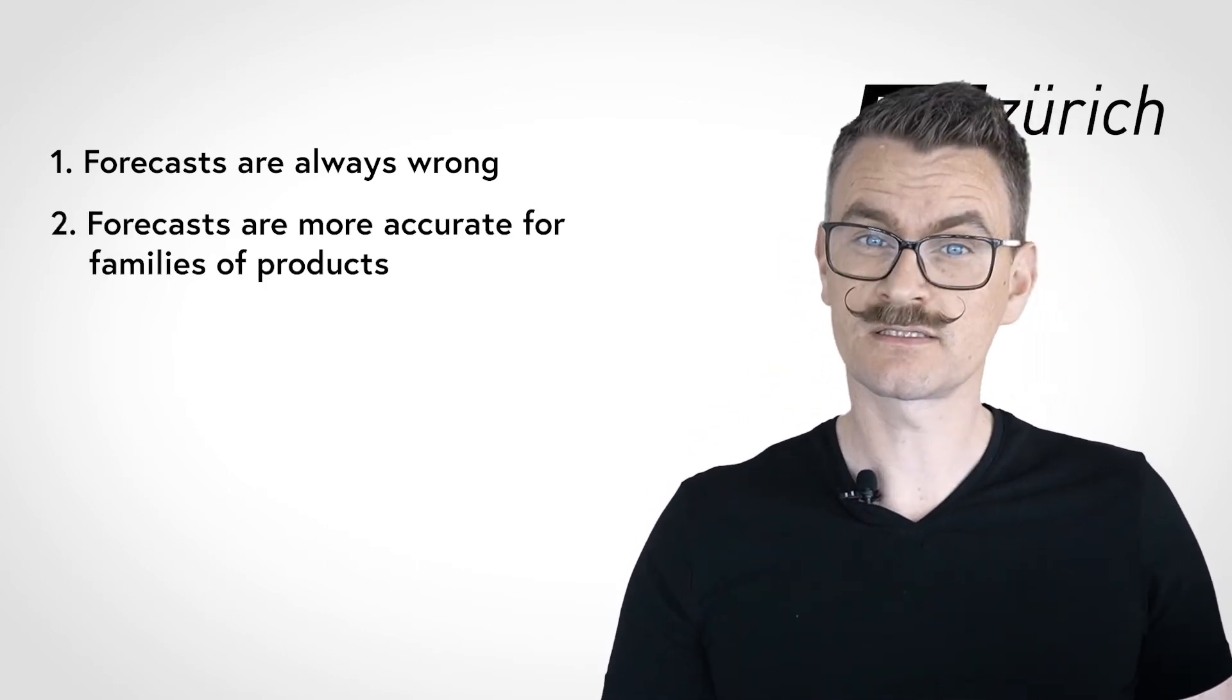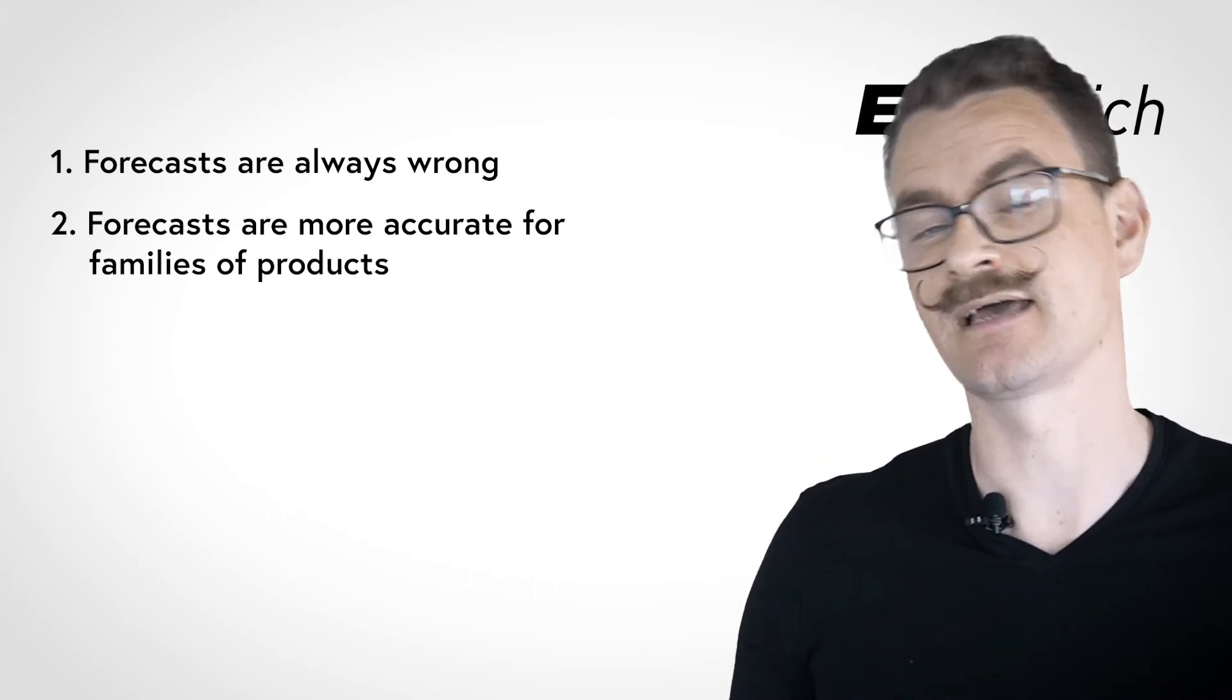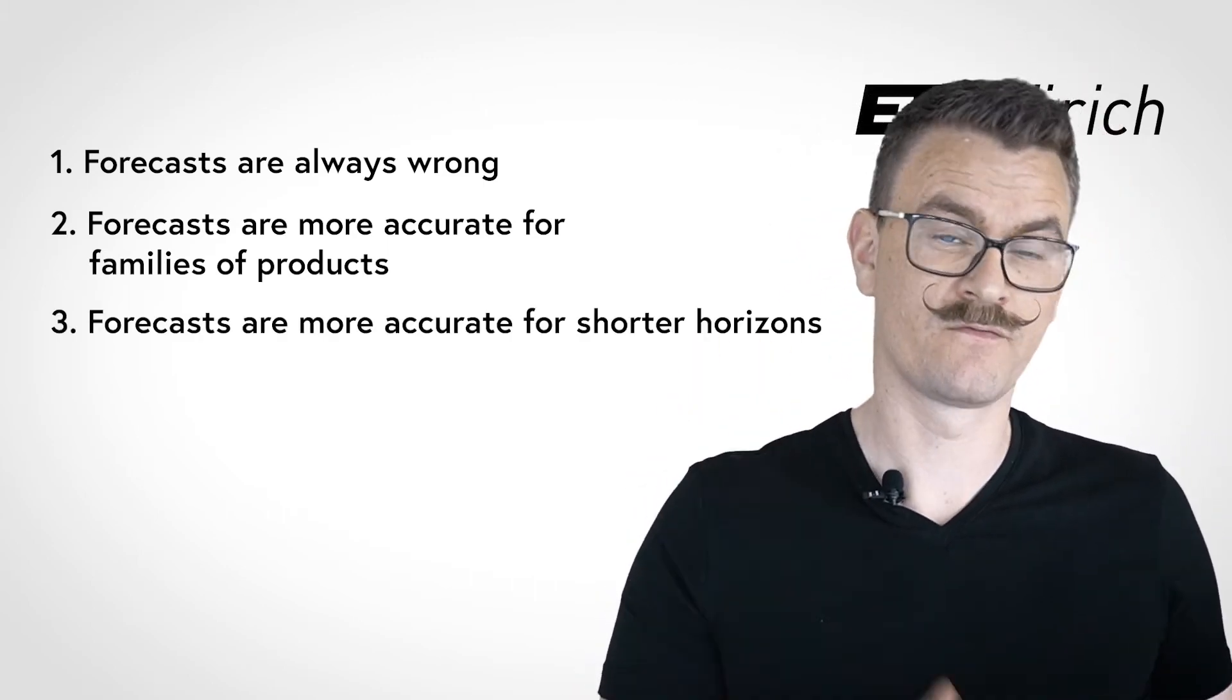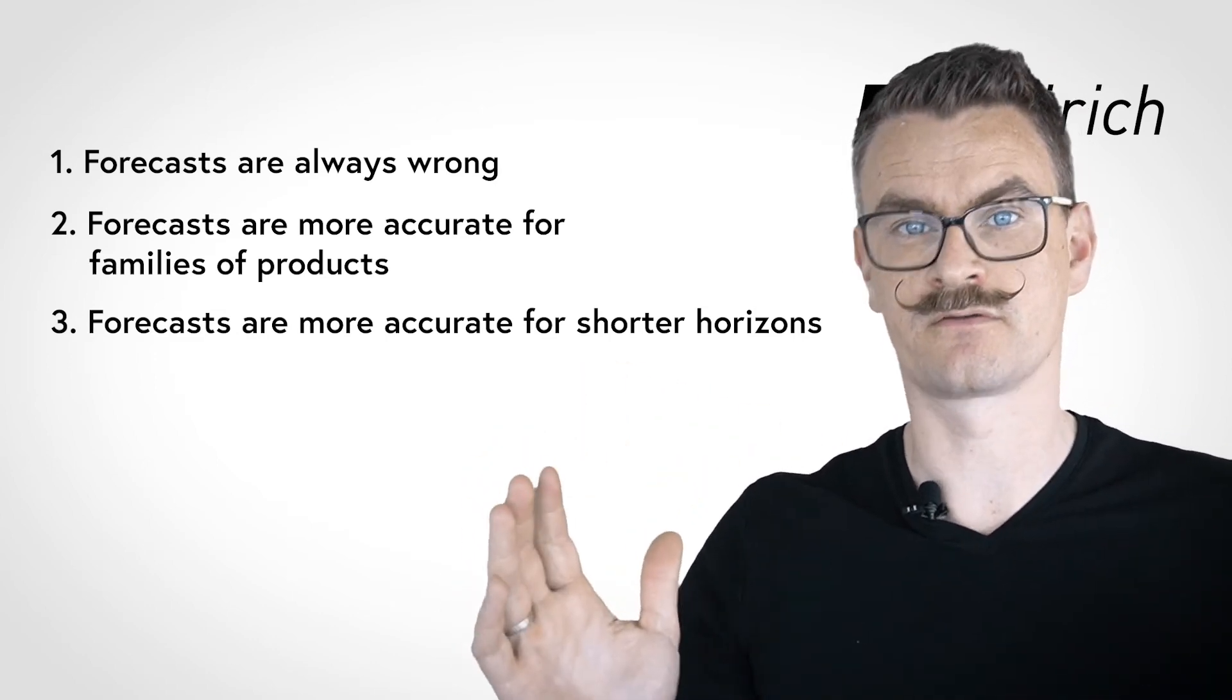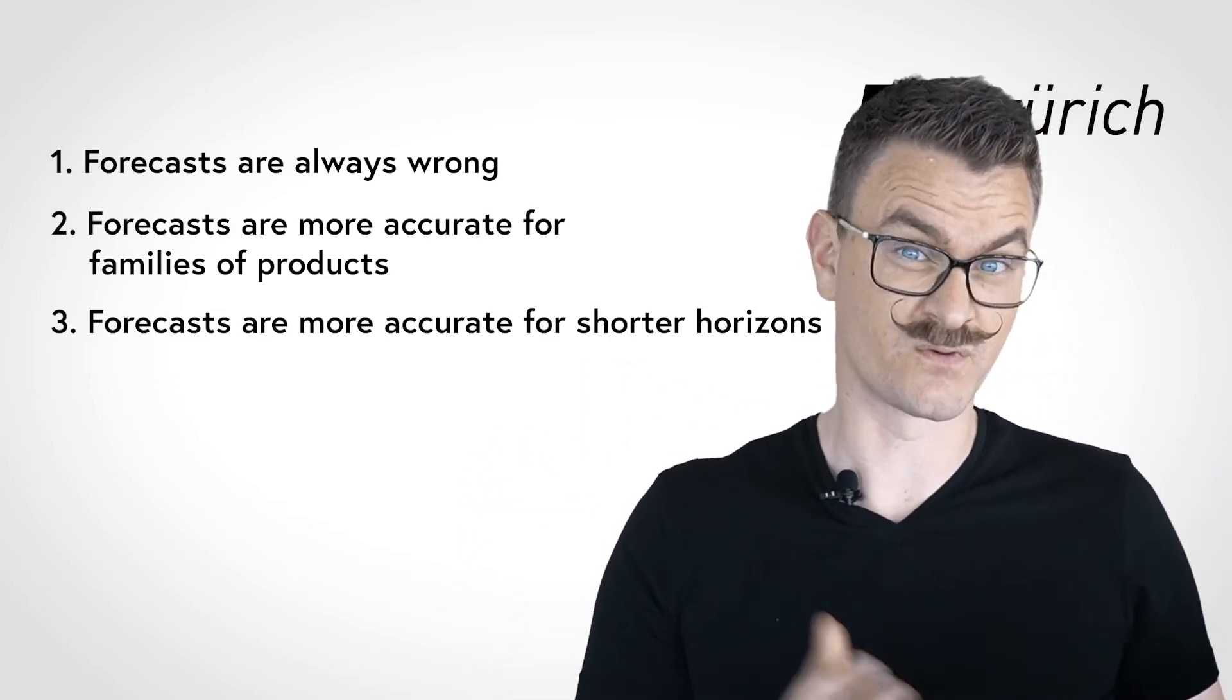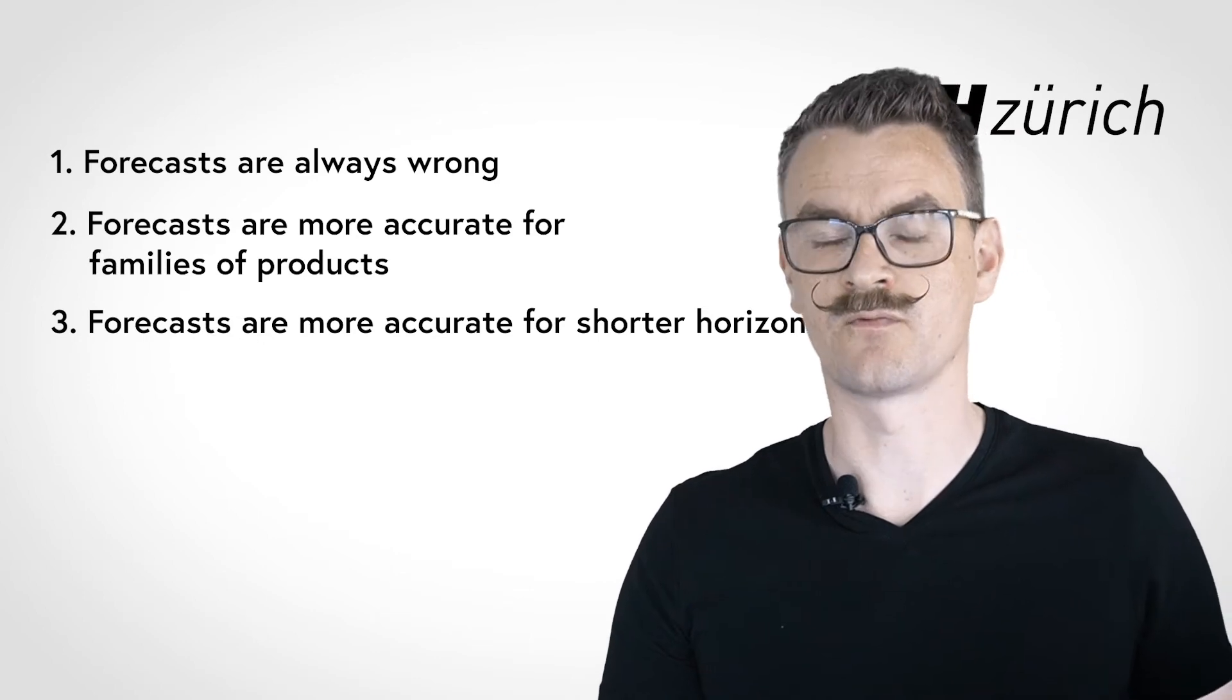Second, forecasts are more accurate for families of items than for single items. Third, forecasts are more accurate for shorter time horizons than for longer horizons. The weather forecast for tomorrow is more accurate than the one for next week.